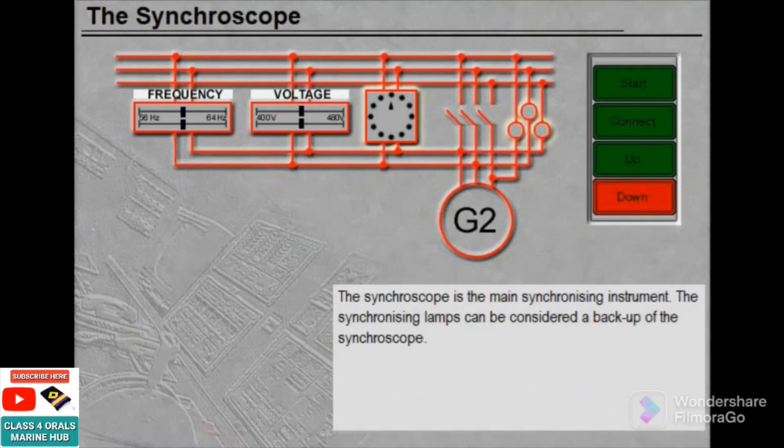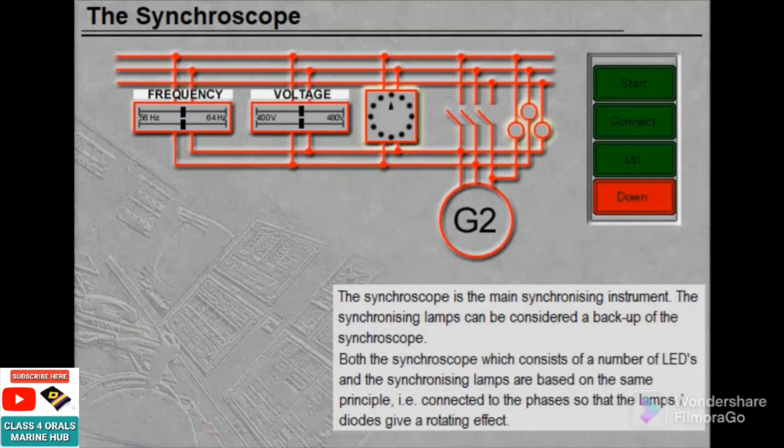The synchroscope is the main synchronizing instrument. The synchronizing lamps can be considered a backup for the synchroscope. Both the synchroscope, which consists of a number of LEDs, and the synchronizing lamps are based on the same principle.